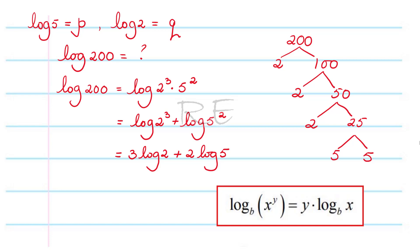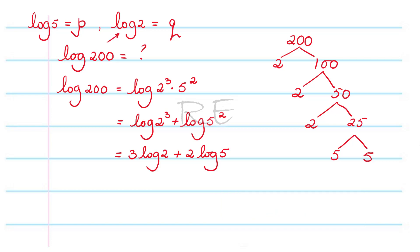Since log of 2 is Q, that gives us 3Q. And since log of 5 is P, that gives us 2P. So log of 200 equals 3Q plus 2P.